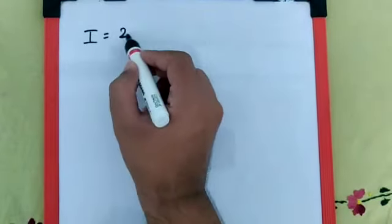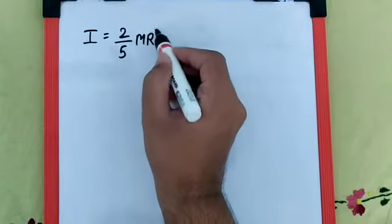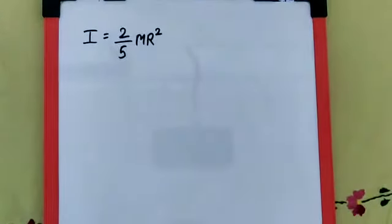The next question says the moment of inertia of a solid sphere along its diameter is I, which can be written as 2/5 MR². The question further says it is then casted into eight small identical spheres.